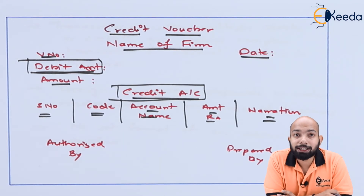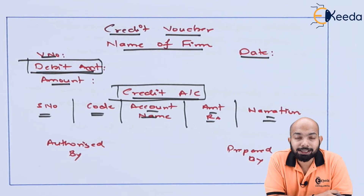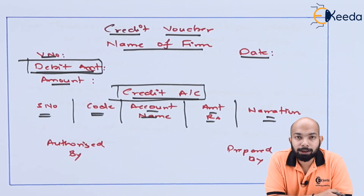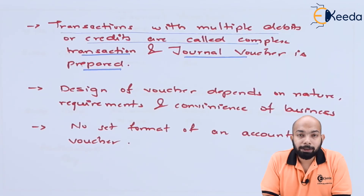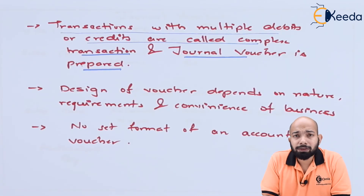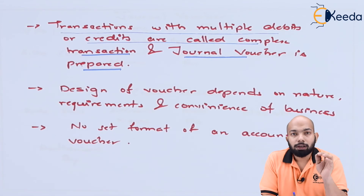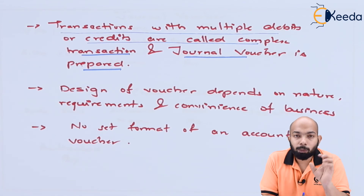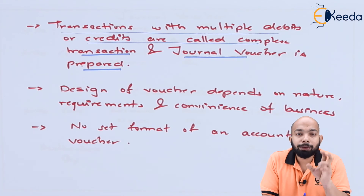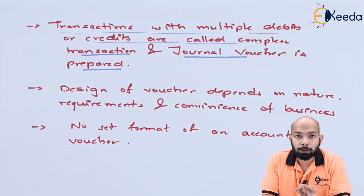As mentioned earlier, there is no specific format for any kind of voucher; it depends on the kind and nature of the business. Transactions that have multiple debits and credits in one transaction require a complex voucher, also called a journal voucher. When you have multiple debits and credits in one single transaction, you prepare a journal or complex voucher.